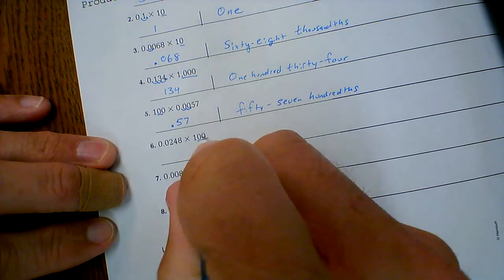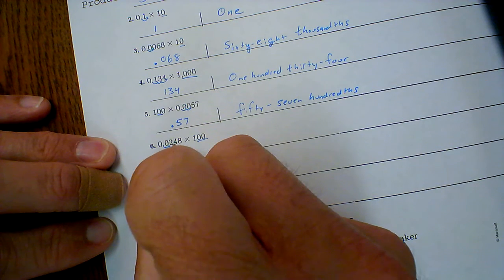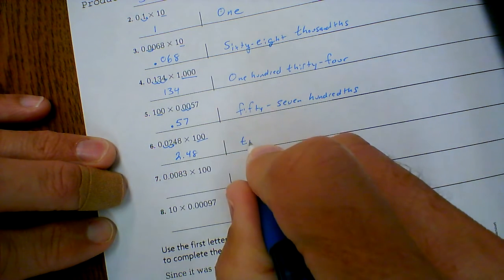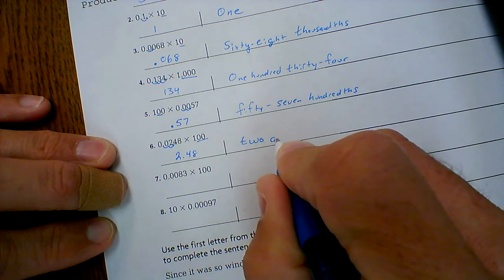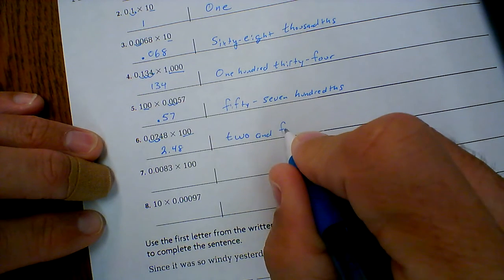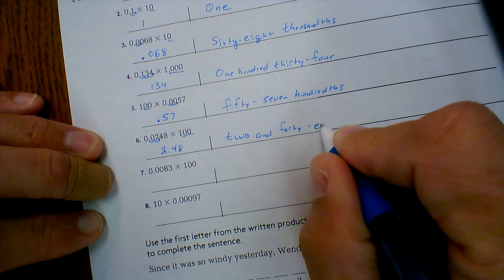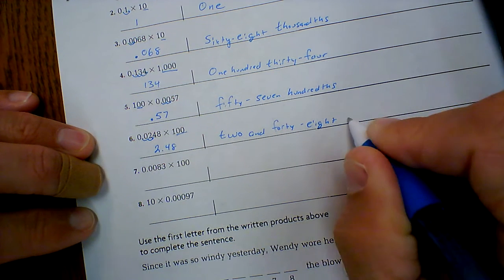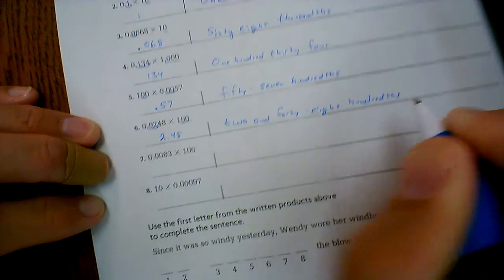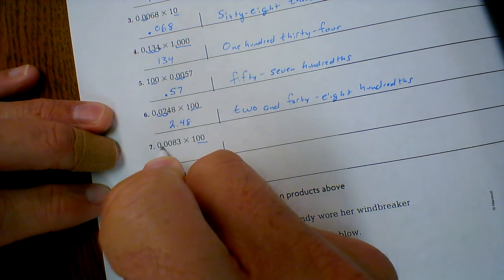Two zeros: one, two. Two and forty-eight hundredths. Two zeros, so move it twice.